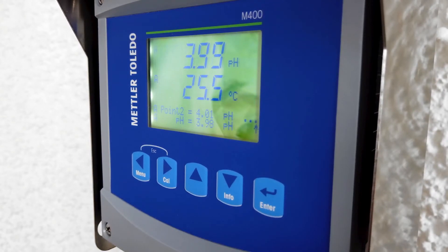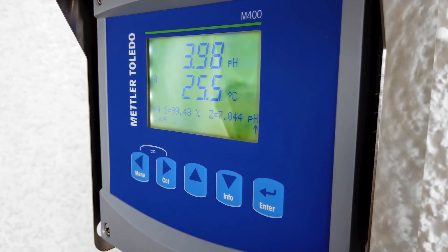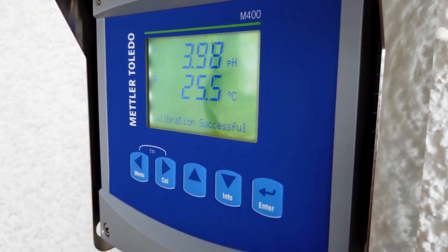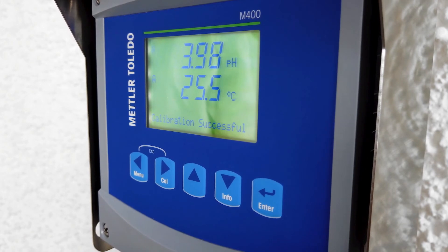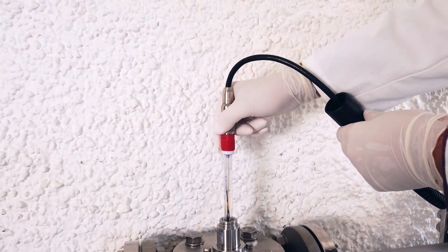Now you can see on the M400 transmitter that the sensor was calibrated with the displayed slope in percentage value and a zero point and pH value. You can now adjust the sensor by clicking enter. This saves the calibration data and stores the values for the zero point and slope on the transmitter.